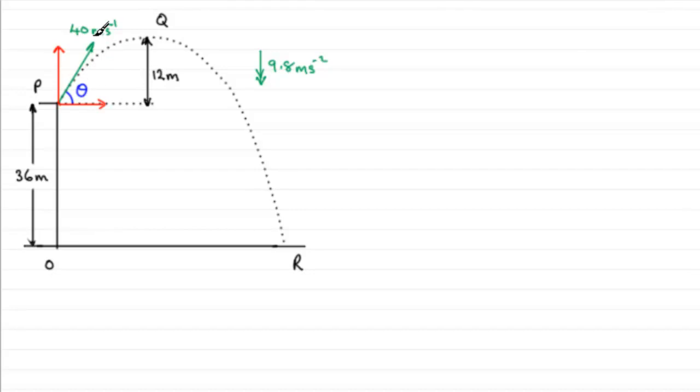Now the horizontal component contains the angle theta, so it's going to be 40 cos theta in meters per second. The vertical component, because it doesn't contain the angle theta in this right angle, will be 40 sine theta. So we'll just pop that in there, 40 sine theta.